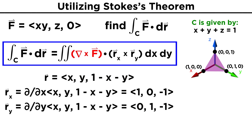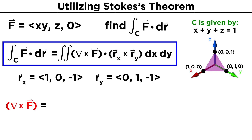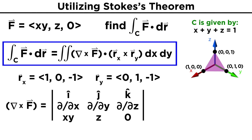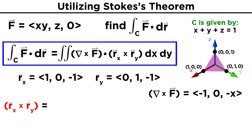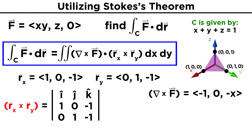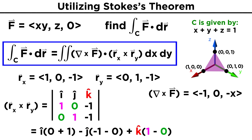Now we must calculate the curl of F and the cross product R_x cross R_y. The curl of F is del cross F, which means we must take the determinant of this matrix. We end up getting i(0 minus 1) minus j(0 minus 0) plus k(0 minus X), which simplifies to (-1, 0, -X). Now for R_x cross R_y, we take the determinant of this matrix. Here we get i(0 plus 1) minus j(-1 minus 0) plus k(1 minus 0), which is simply (1, 1, 1).